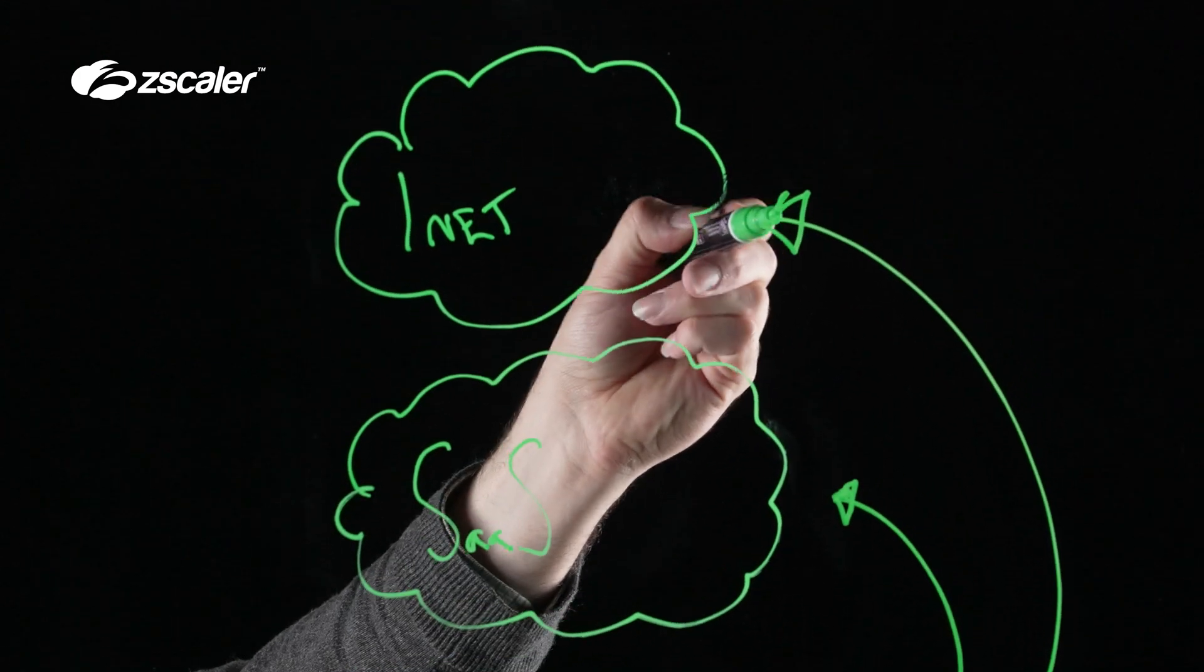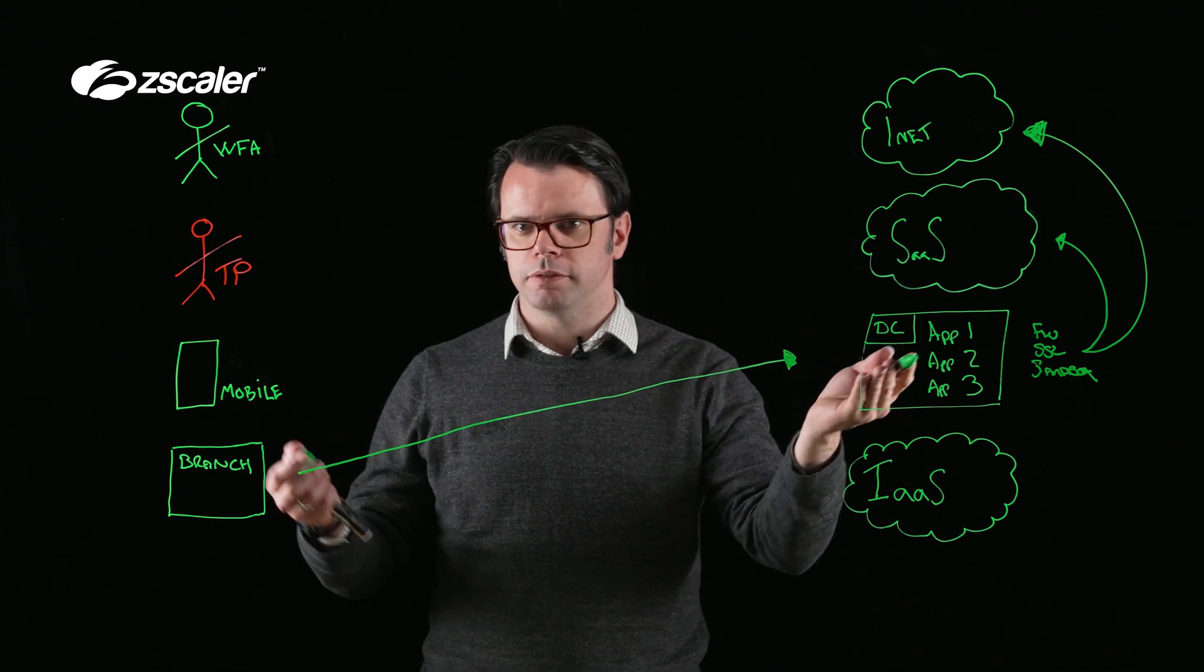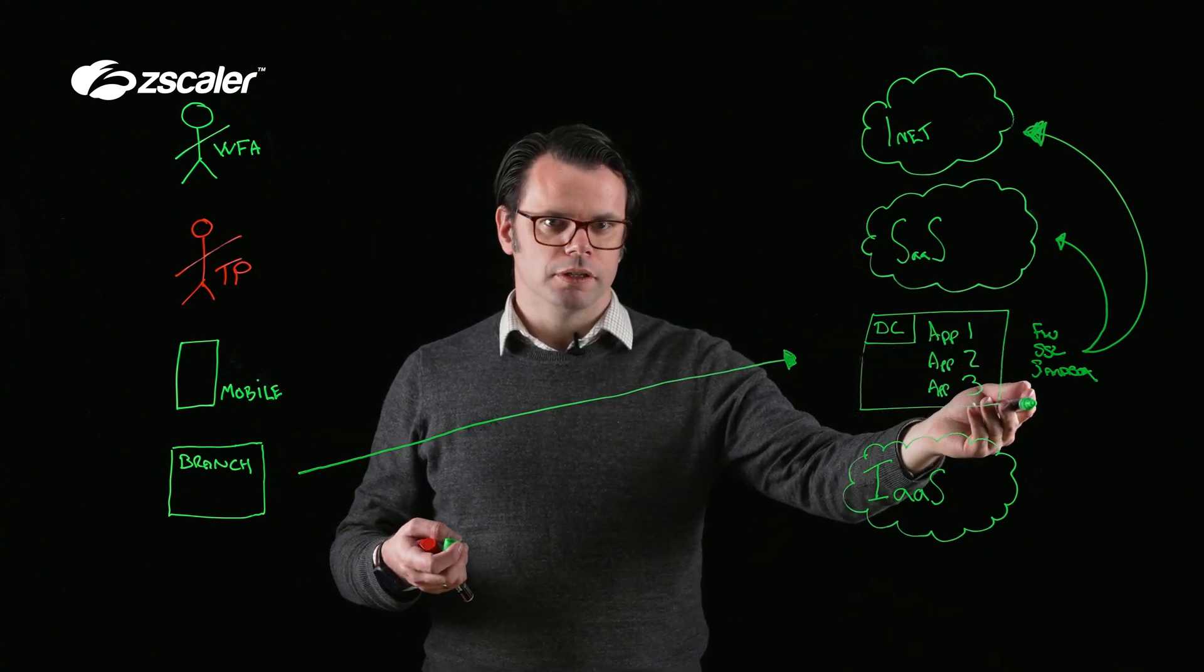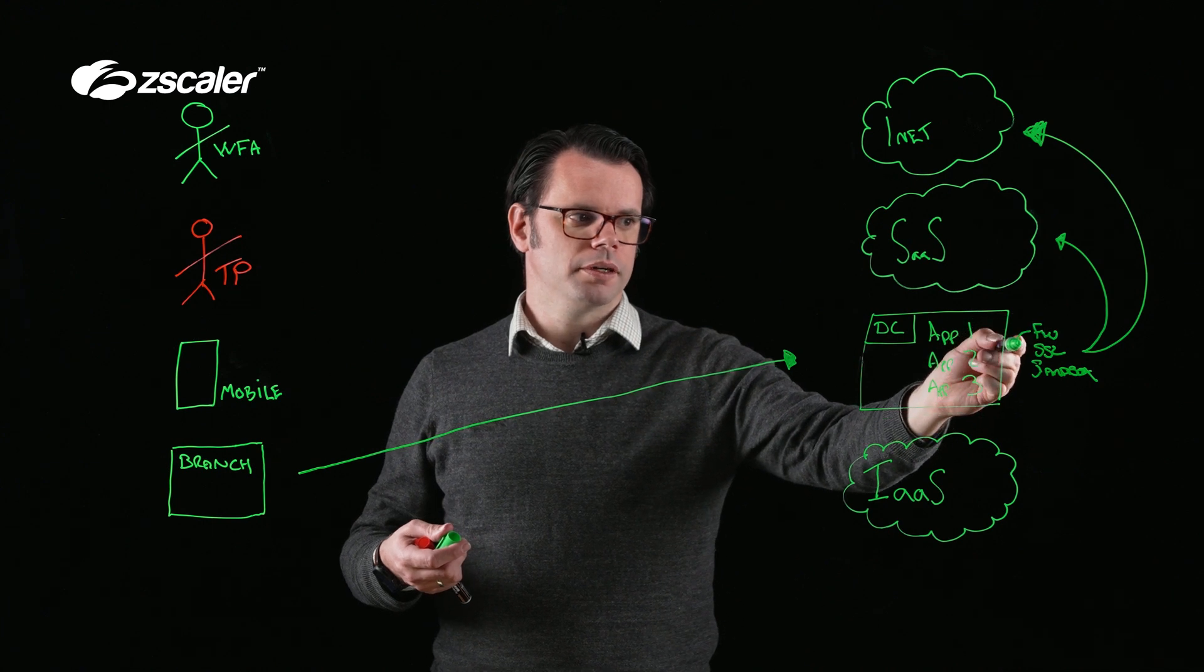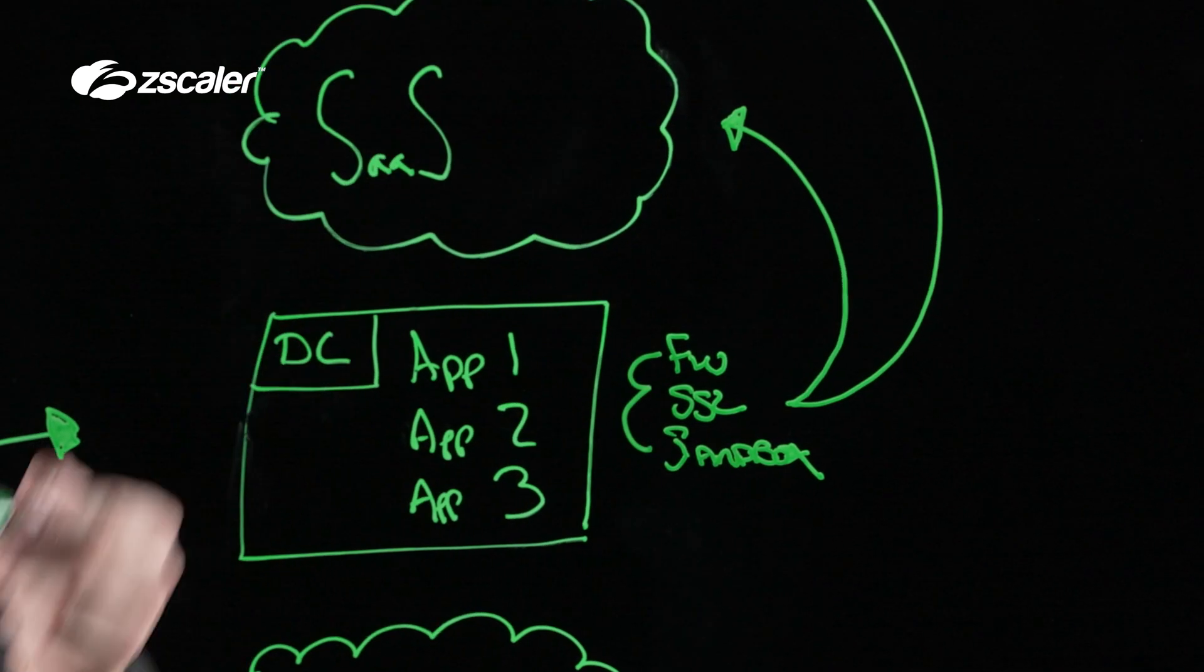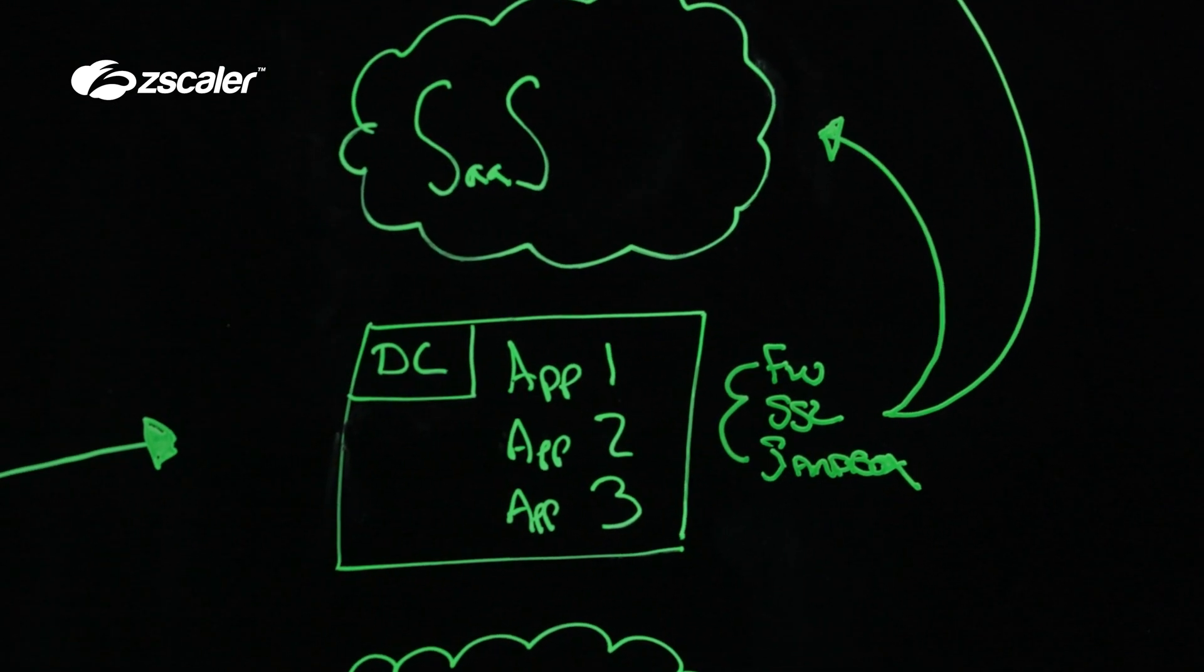The challenge with this being that it's quite inefficient, coming from the branch through the data center, which potentially is quite far away, and then to break out through all of these security controls chained one after the other, each adding a layer of latency to the internet. So not the most direct way to do this.